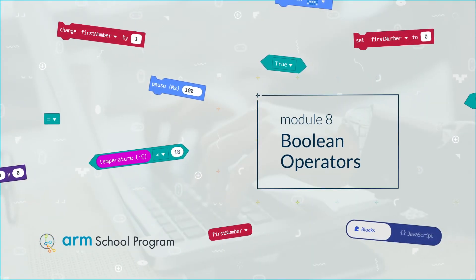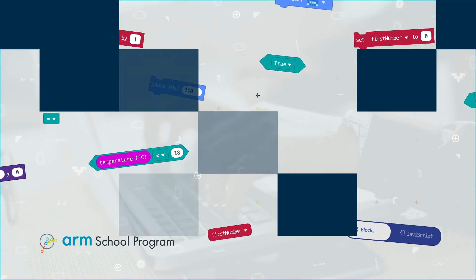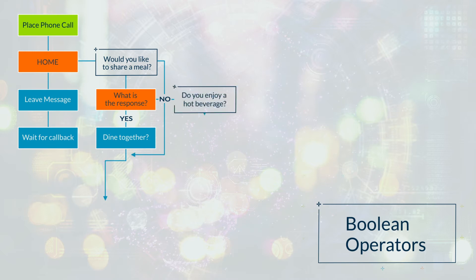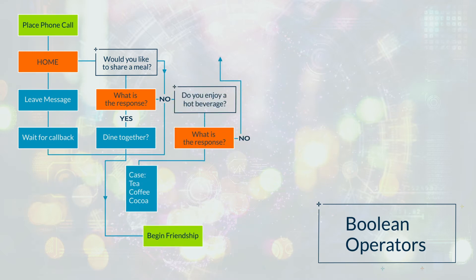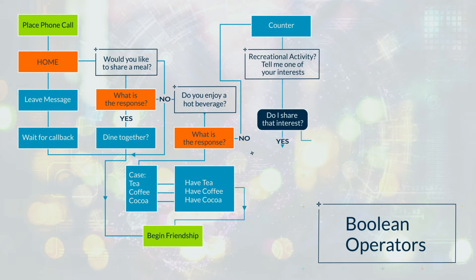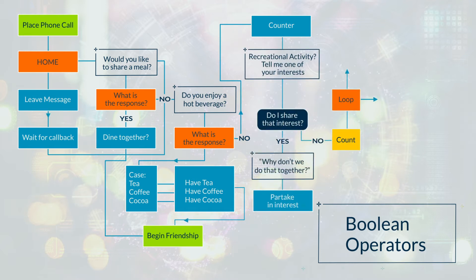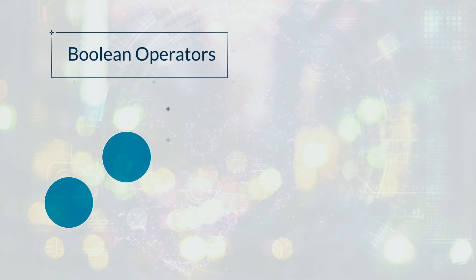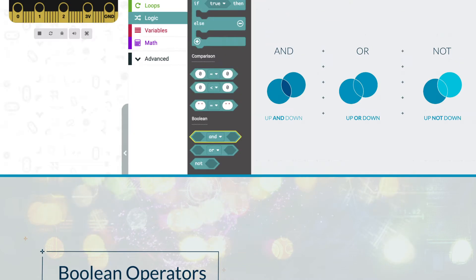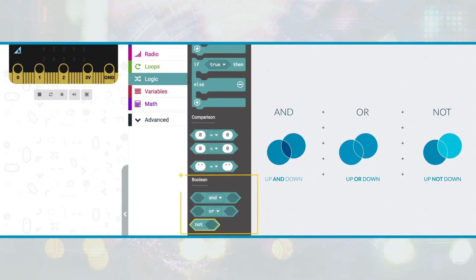Module 8 – Boolean Operators. In an if-then statement, or in loops that you will learn about later, you can use Boolean Operators. These let you check more than one condition before running blocks. There are three different Boolean Operators – AND, OR and NOT. You can find these in the Logic menu under Boolean.